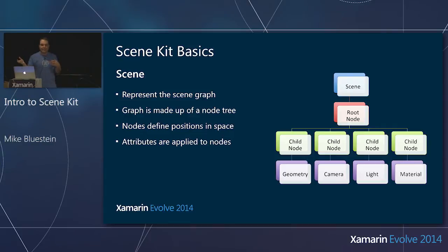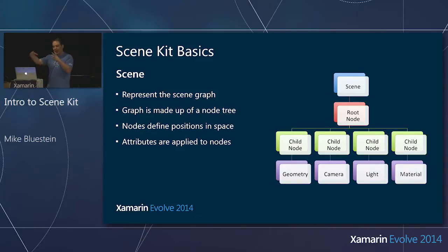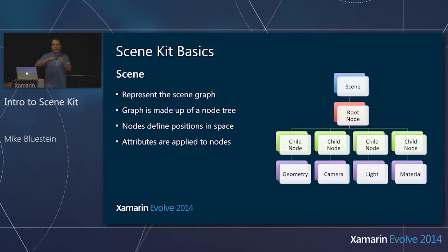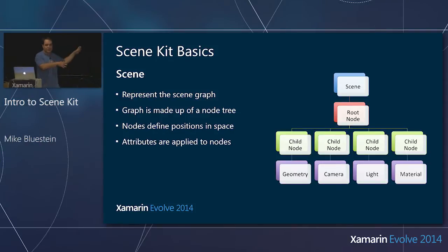You add lighting to a scene to illuminate it — there are different kinds of lighting — and a camera to represent the point of view, how you're actually looking at the scene. You can change the point of view and field of view. When you build up this scene graph, the big point is you never have to make a GLBind call — you're not rendering anything directly. The scene graph does it for you.